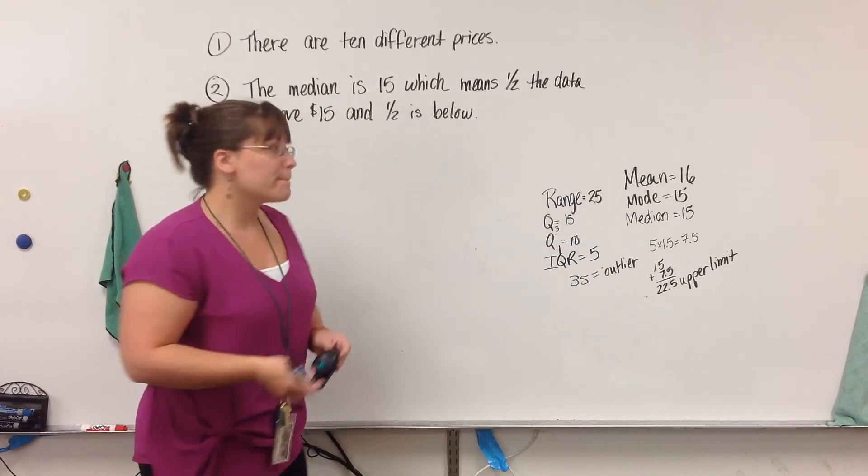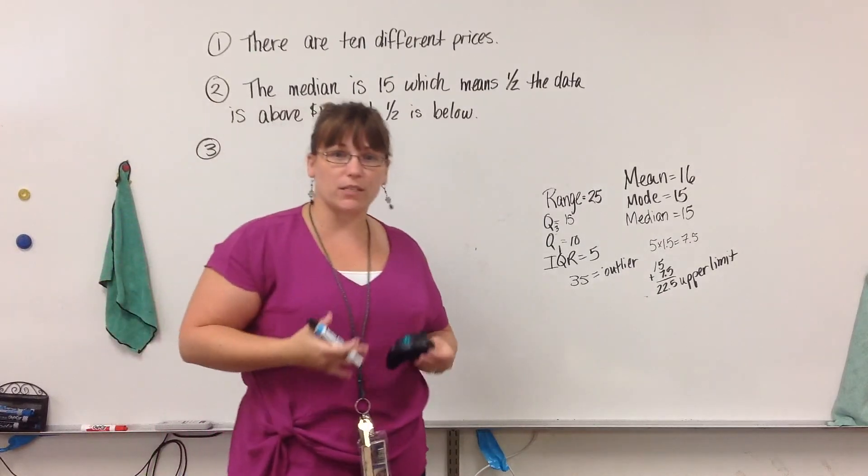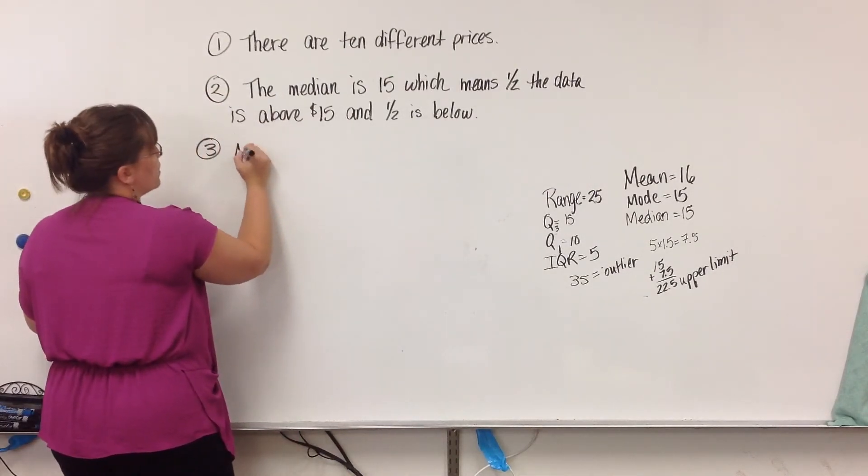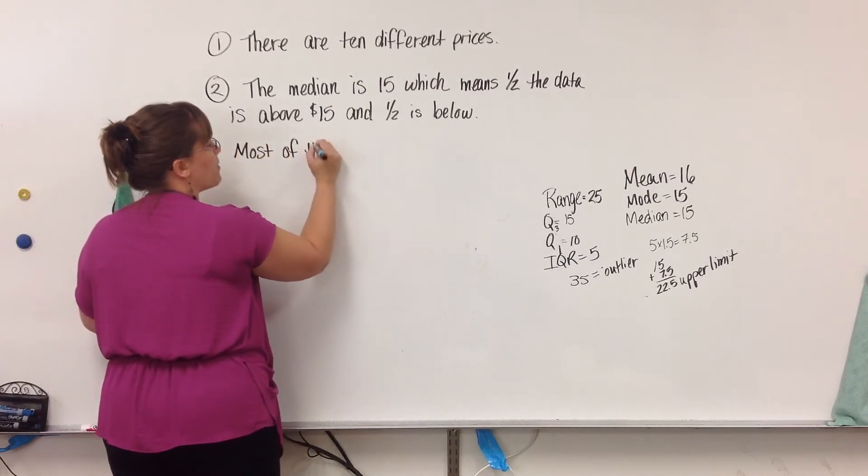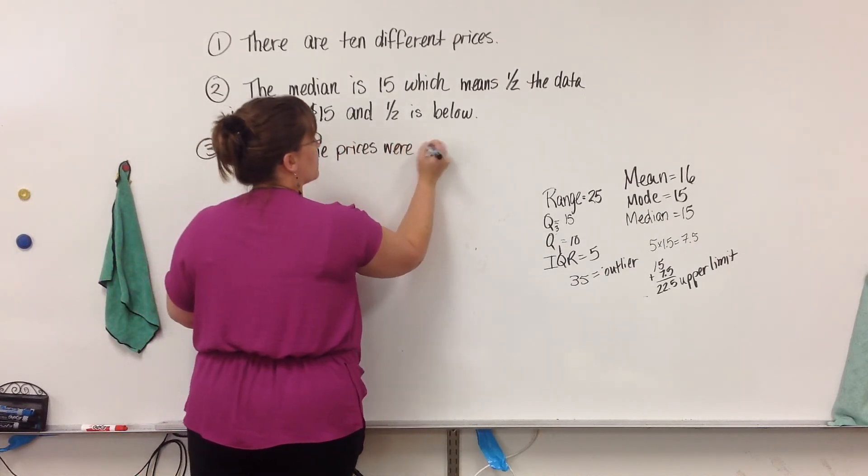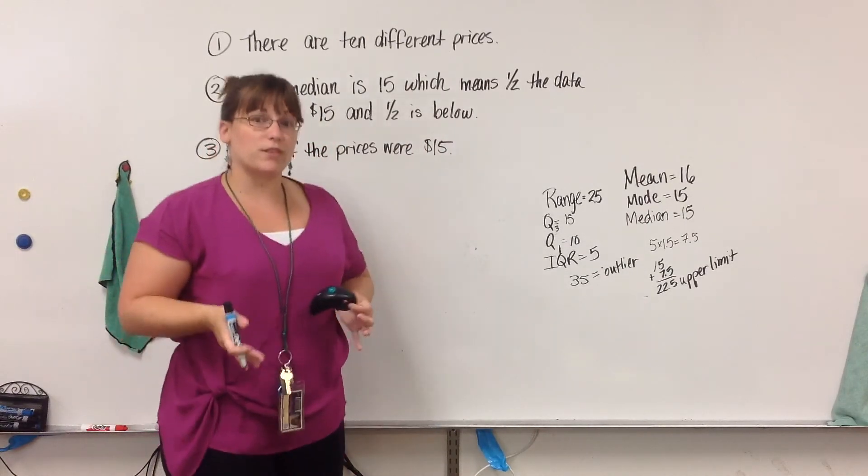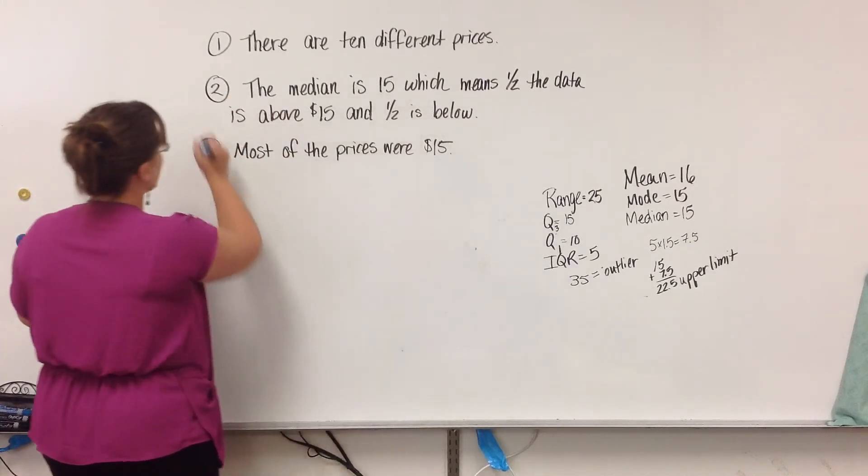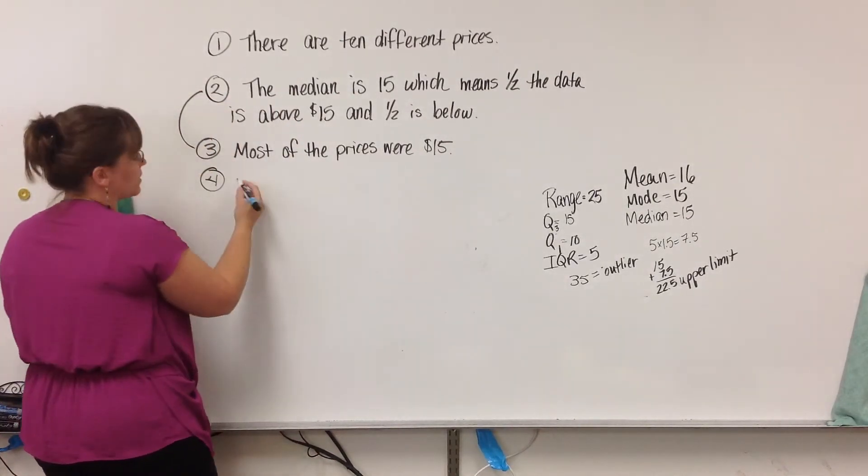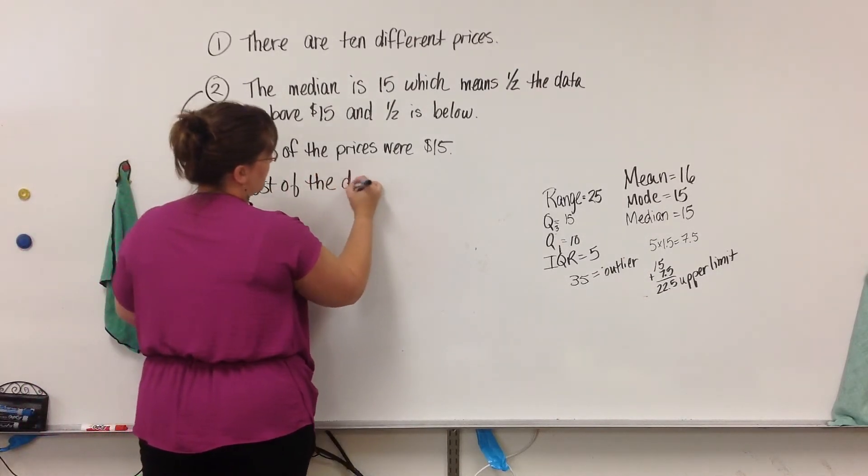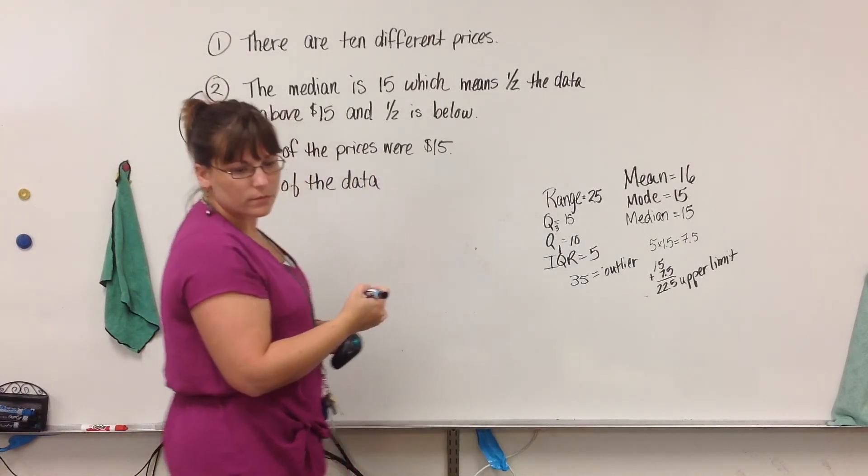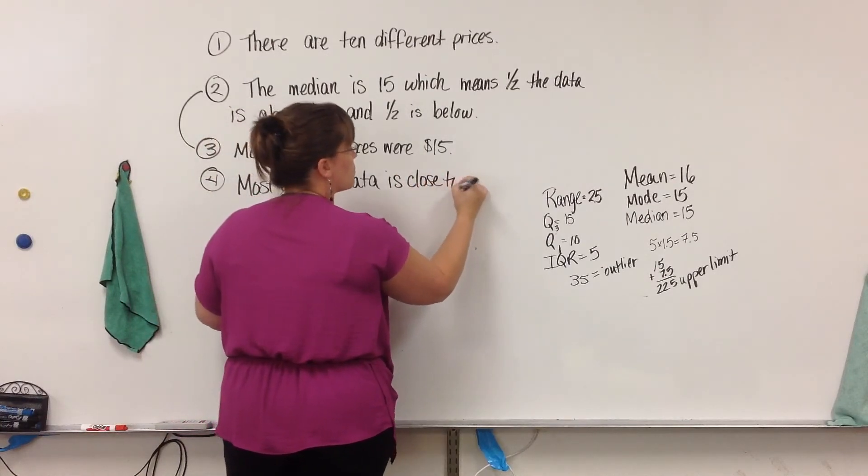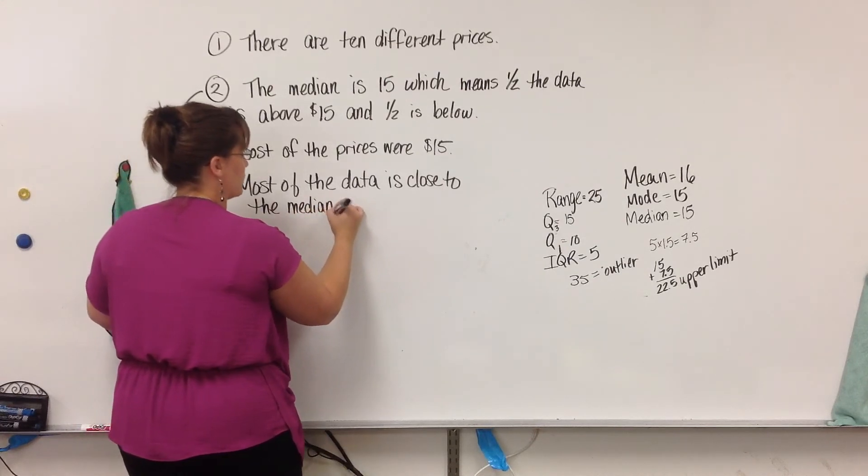The next thing you can talk about is the mode. The mode being most of the prices, where are they? So, more prices are 15 than any other price because the mode is 15. Most of the prices were $15. What's unique to this one is that the mode and the median were the same. So, another thing you can say when that happens is that most of the data is close to the median. The idea is to say that most of the data is close to the median, which is the same as the mode.